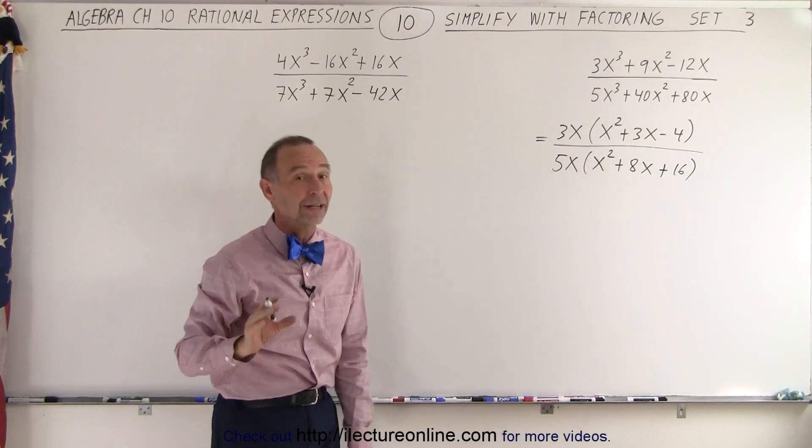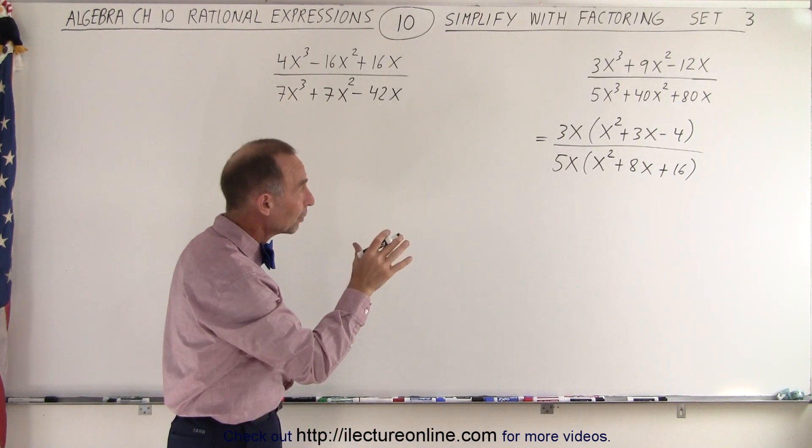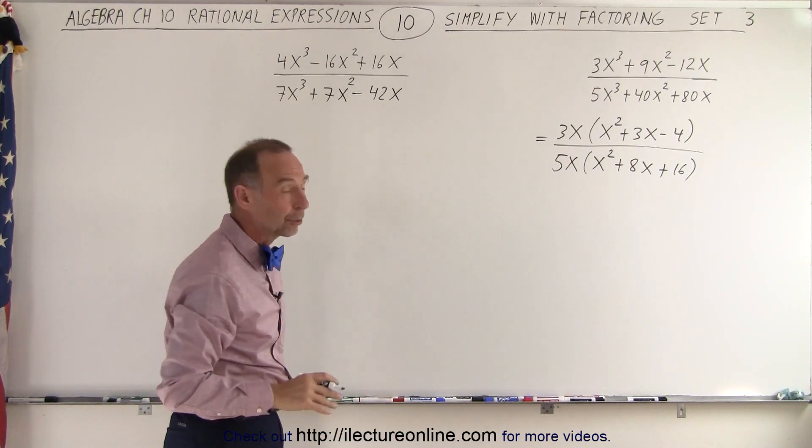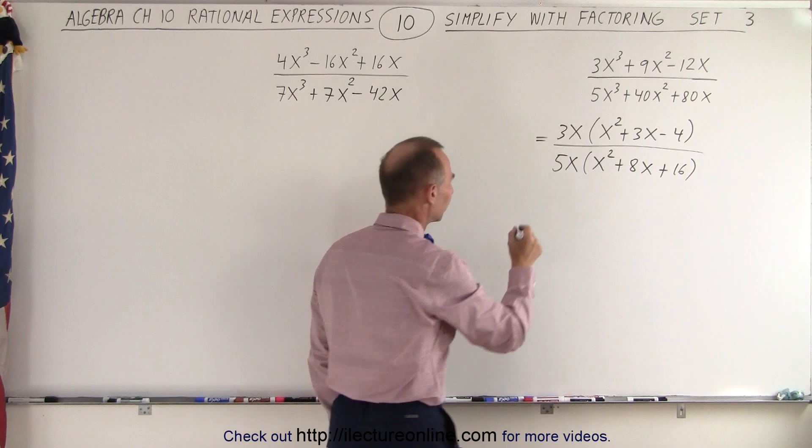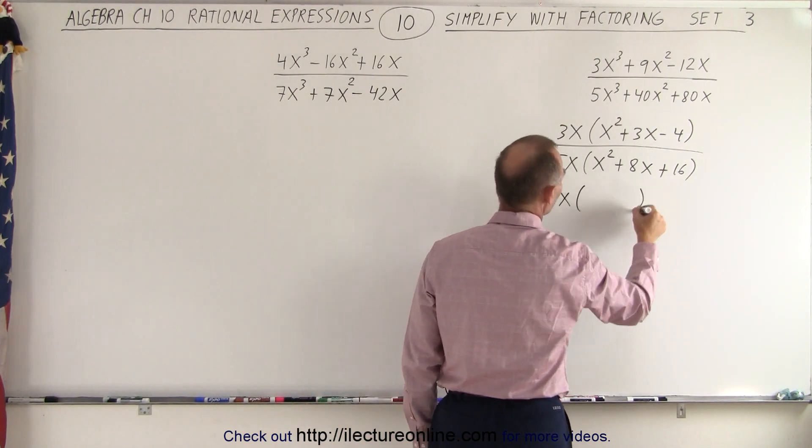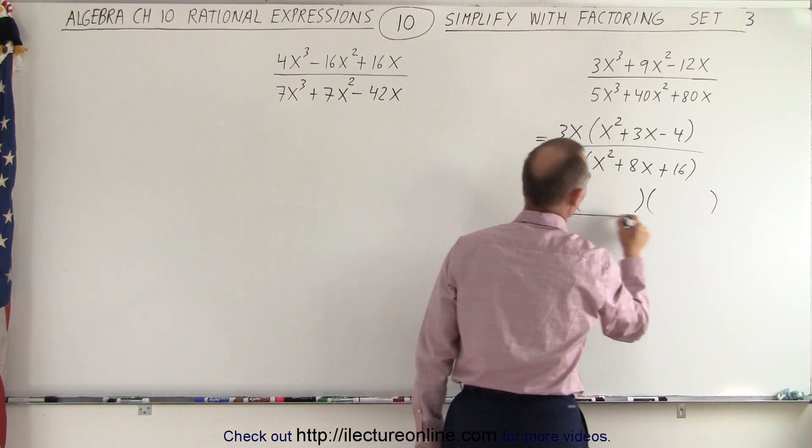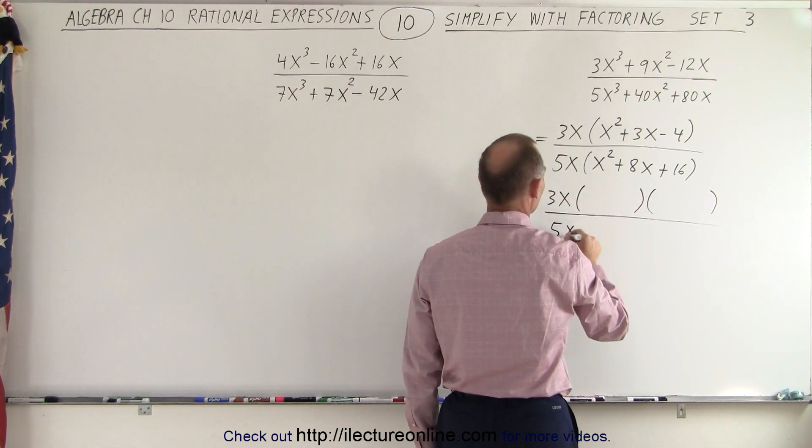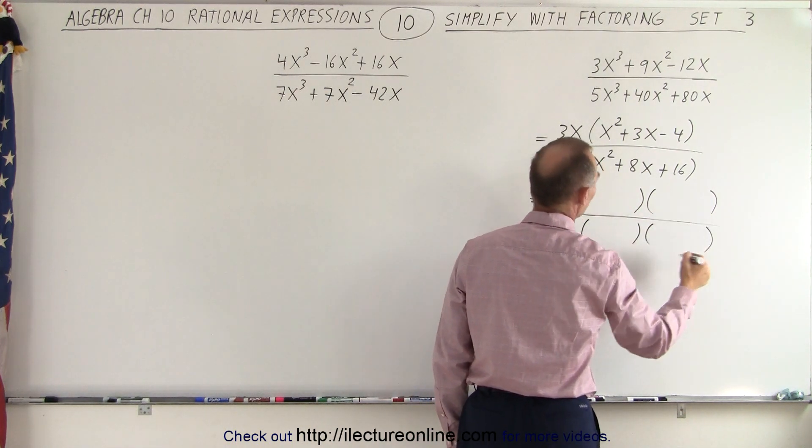Now we realize that things are not as bad as we thought. We should be able to factor the numerator and the denominator quite readily, so let's see what happens. So this is equal to 3x times the product of two binomials divided by 5x times the product of two binomials.